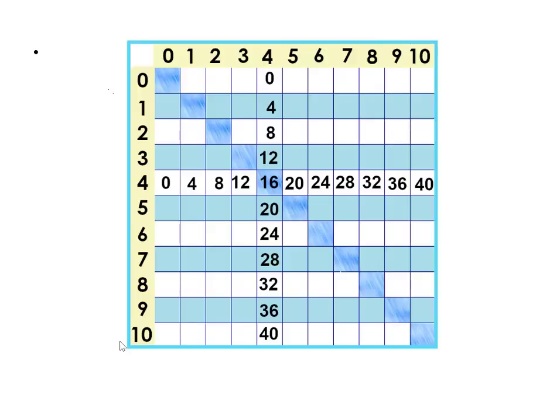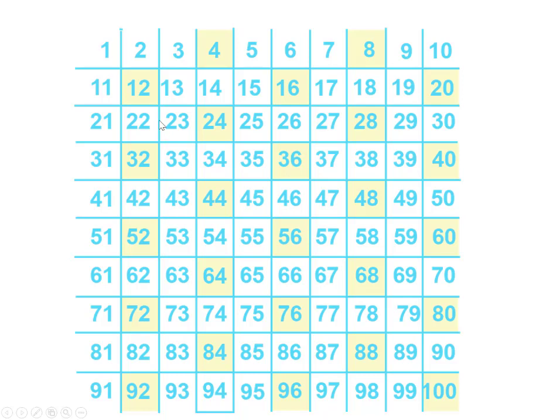Here are the 4 times tables on the times table chart. 6 times 4 is 24. And what they look like on the number chart. To multiply a number by 4, we can double that number twice.